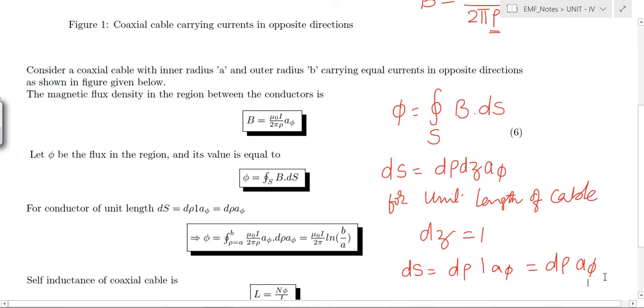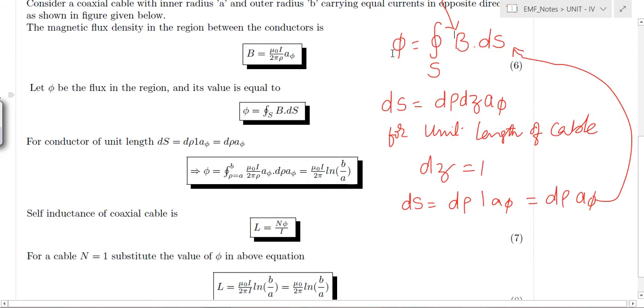Now we substitute this ds value in this equation along with the value of B so that we can find out the magnetic flux available in the surface between the conductors. This rho value changes from outer radius of the inner conductor a to the inner radius of the outer conductor b. The value is mu 0 I by 2 pi rho a phi dot ds value is d rho a phi.